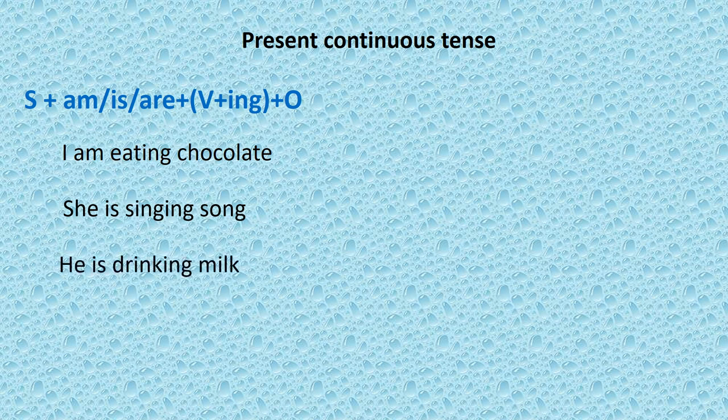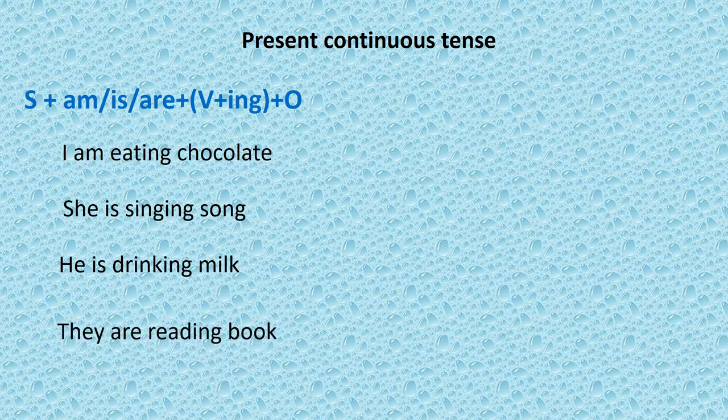He — singular — so 'is'. Drink with -ing: drinking milk. He is drinking milk. They — plural — so 'are'. Read with -ing: reading book. They are reading book. We — pustak pad rahe hai.